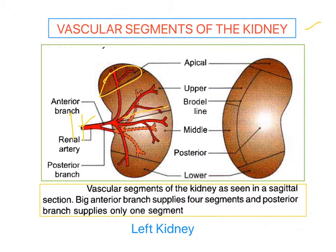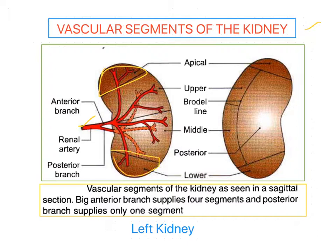On the anterior aspect, each kidney — both right and left — is divided into the upper part called the apical part, the lower part called the basal part, and also the upper segment and the middle segment. These are the four segments visible on the anterior aspect of the kidney on both sides.